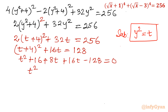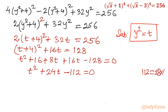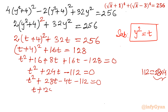So the equation is t² + 24t - 112 = 0. I can split the middle term: 112 = 28 × 4, and their difference is 24. Writing t² + 28t - 4t - 112 = 0, we get (t + 28)(t - 4) = 0. So t = 4 or t = -28.